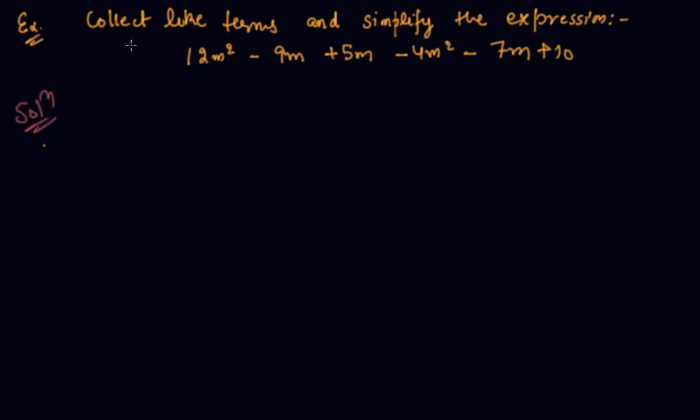Here is another important question which says collect like terms and simplify the expression. So first we will see the like terms pair. First is 12m² and this is 4m². Second is 9m, 5m, 7m. You can take with the sign also.